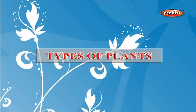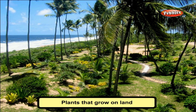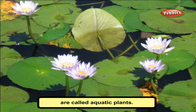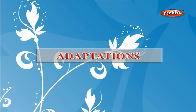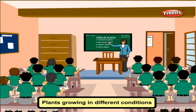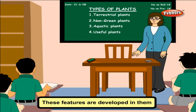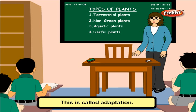Types of Plants: Plants that grow on land are called terrestrial plants. Plants growing in water are called aquatic plants. Plants growing in different conditions have special features. These features help them to survive in their natural climatic conditions. These features are developed in them over a very, very long period of time. This is called adaptation.